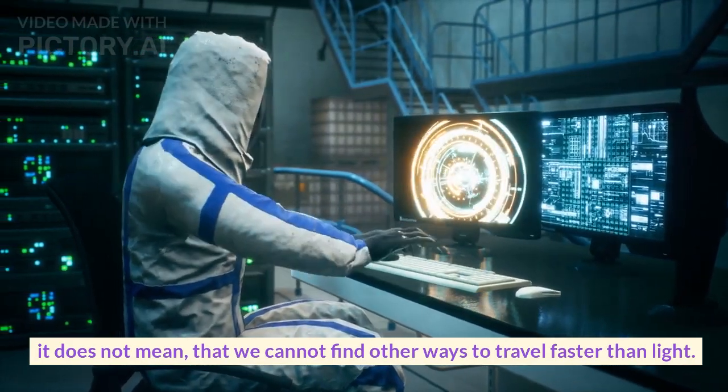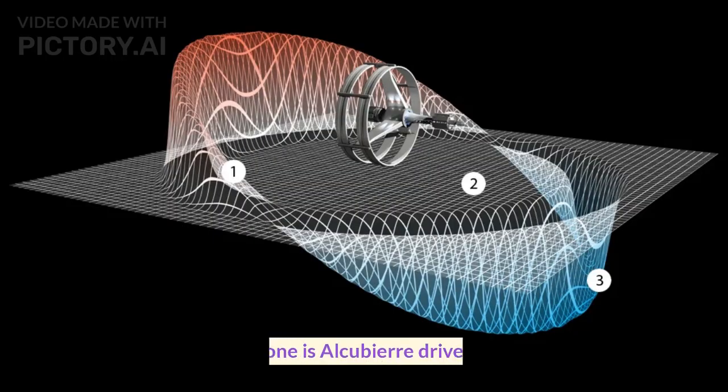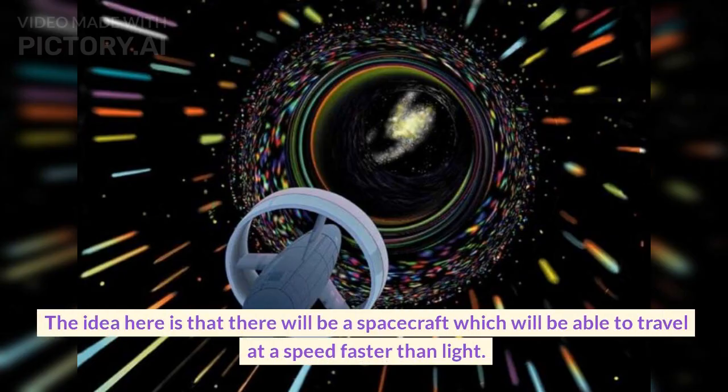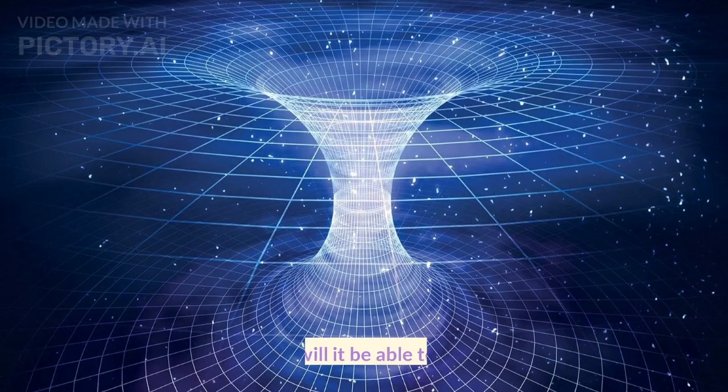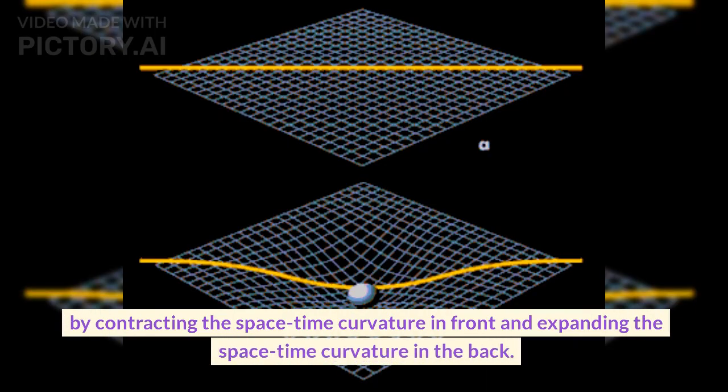Theoretically, several other solutions are proposed. One is the Alcubierre drive. It was proposed in 1994 by theoretical physicist Miguel Alcubierre. The idea here is that there will be a spacecraft which will be able to travel at a speed faster than light. But how will it be able to do that? By contracting the space-time curvature in front and expanding the space-time curvature in the back.